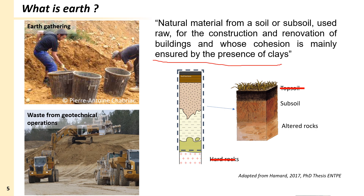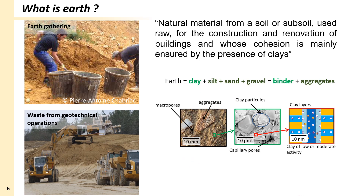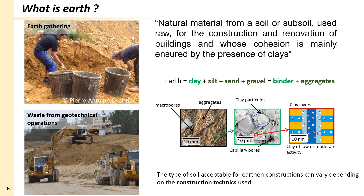This last part of the definition is very important: if you take a non-cohesive soil and add some additive to make it suitable for construction, this new material will not be raw earth — it will be something else. The binder between the aggregates must be provided by the clay matrix. However, this definition alone is not sufficient to define which material is proper for construction, because the type of soil acceptable will strongly depend on the construction technique. Some soils work for all techniques, others only for some, and some soils are not valid for any technique.